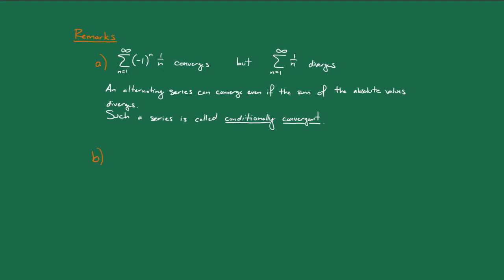Next, notice that the alternating series test didn't give us a way to actually compute the sum, like we would for a geometric series, for example. In general, it's very hard to compute the sum of an alternating series, but there is a way we can estimate the sum.